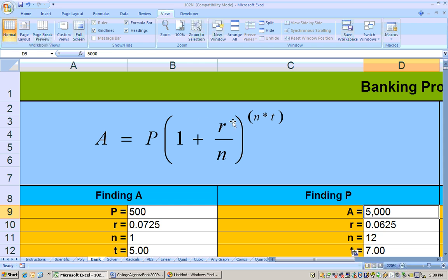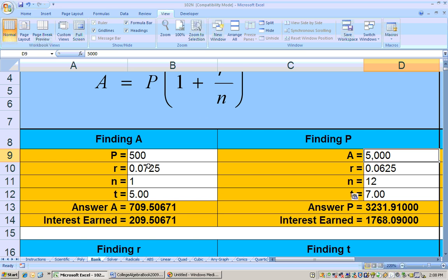On the left-hand side of the sheet, you'll see a formula that looks like this, and here's where we'd be finding the amount of money. So I put in my principal, my rate, my number of times I get interest in a year, and my number of years, and here's my answer right here. And underneath is the amount of interest that I earned.